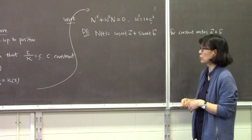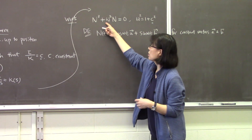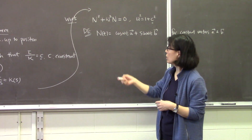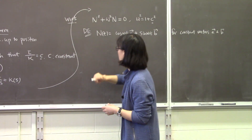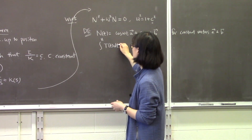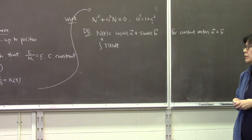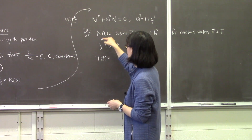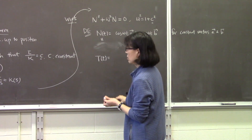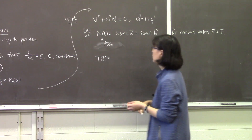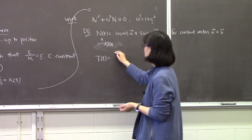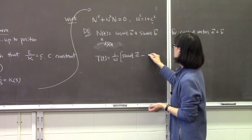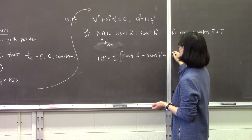The same approach applies here for the real-valued case. We can solve this second-order linear differential equation with constant coefficients. Then, since the derivative of T is N, we take the integral in terms of t and obtain T = (1/w) sin(wt) A minus cos(wt) B plus some constant vector C.